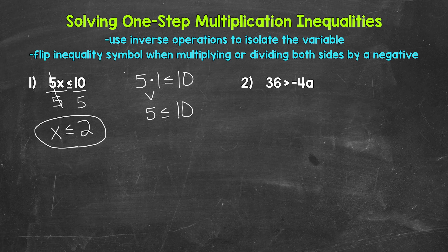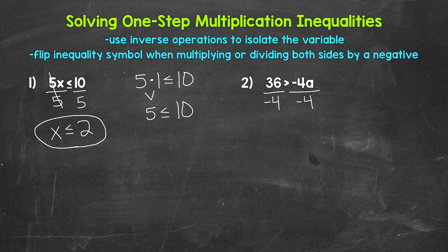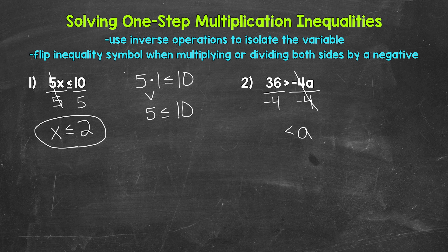Let's move on to number two, where we have 36 is greater than negative four A. We need to isolate the variable A — it's being multiplied by negative four. So we need the inverse operation, division. Divide the right side by negative four, which means we also divide the left side by negative four. Remember, when we multiply or divide both sides by a negative, the inequality symbol flips. So as soon as both sides are divided by negative four, that symbol flips. The negative fours cancel each other out. A is now isolated, and the symbol flips. 36 divided by negative four gives us negative nine. So A is greater than negative nine.